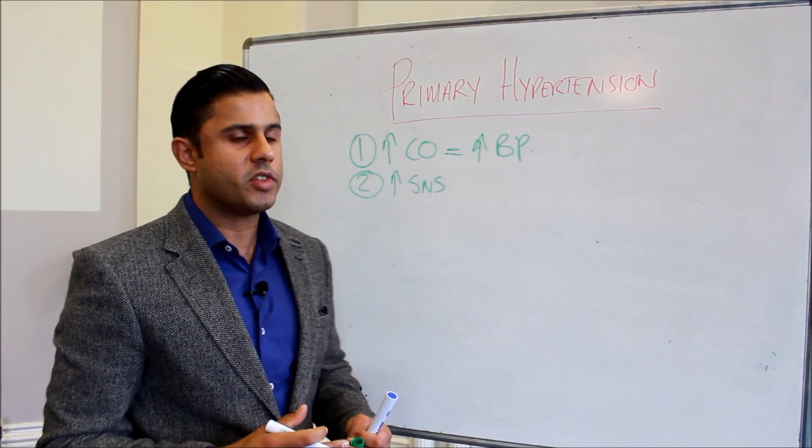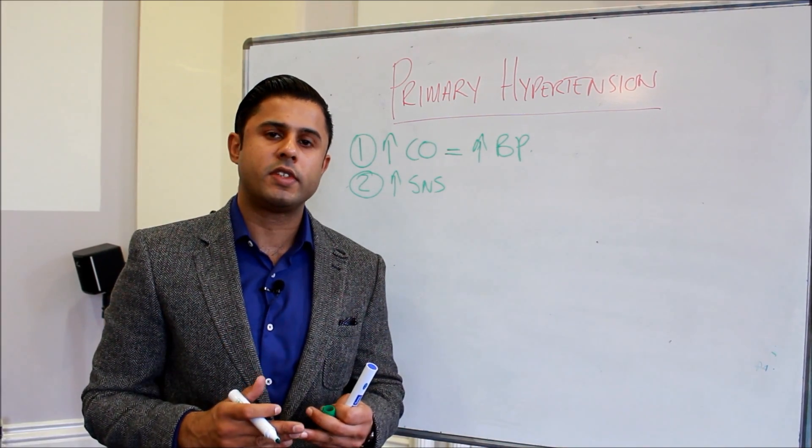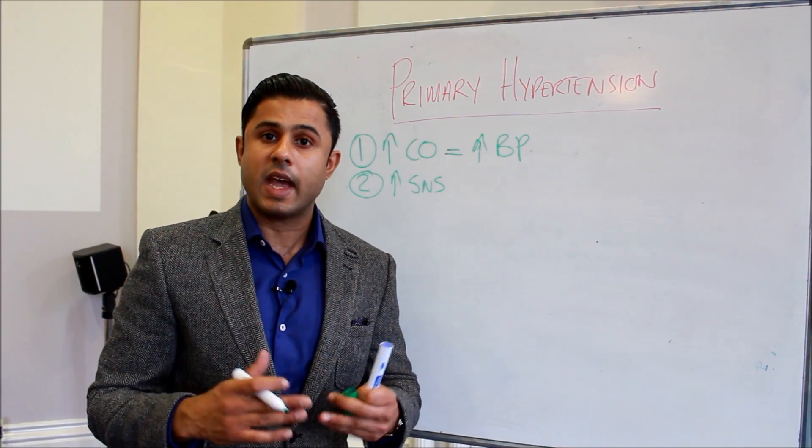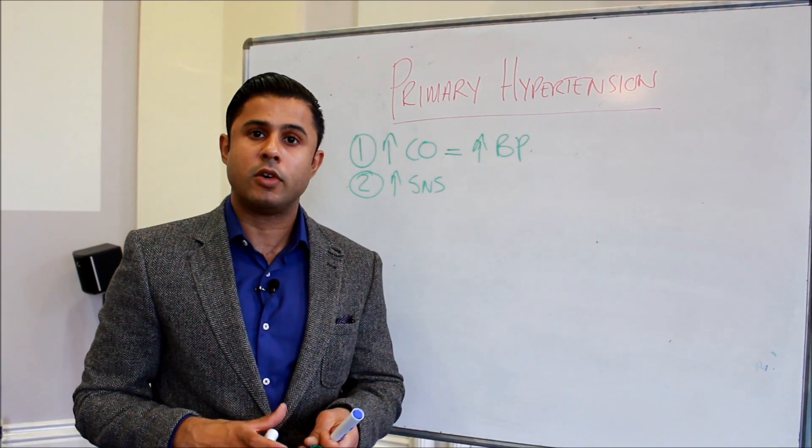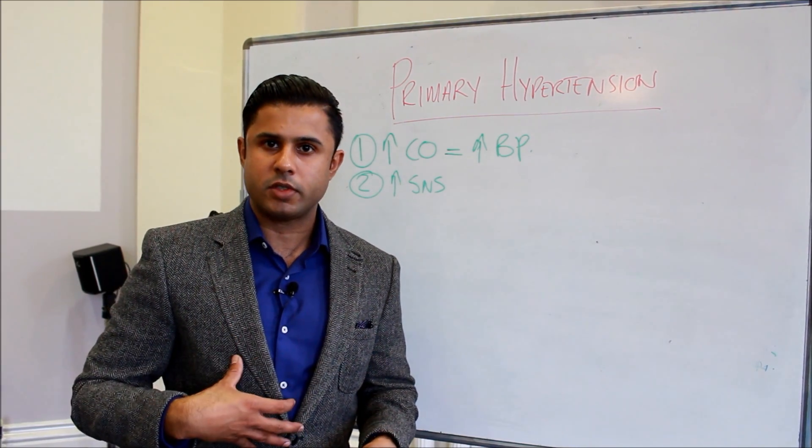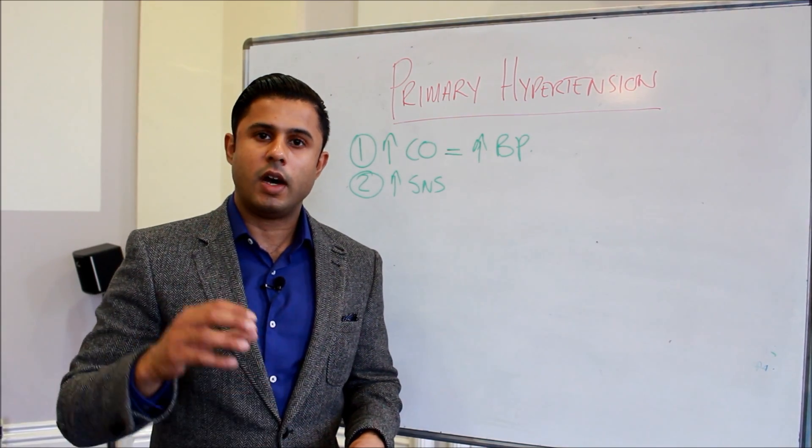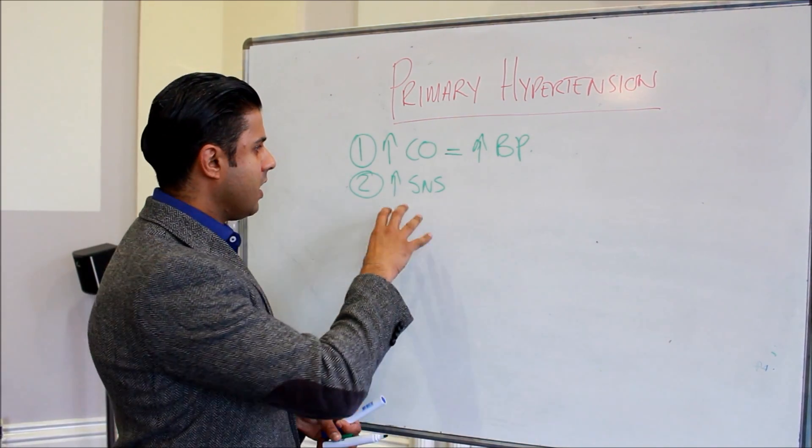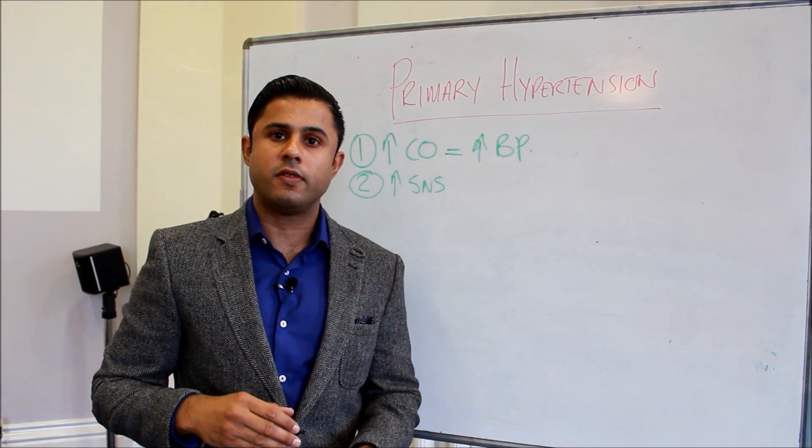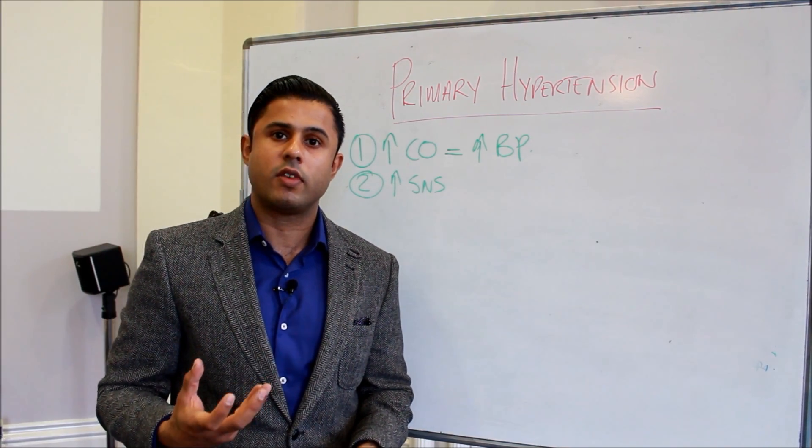It's also been suggested that the sympathetic nervous system activity might be activated by various inflammatory cells that are released by the adipocytes, the fat cells. These adipocytes release proteins which can activate the sympathetic nervous system and cause this vasoconstrictor effect.